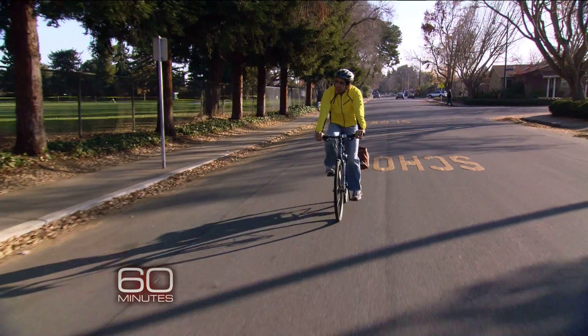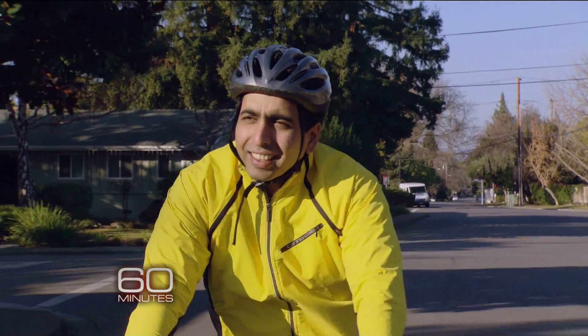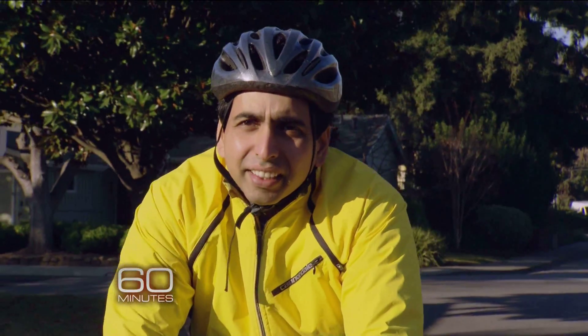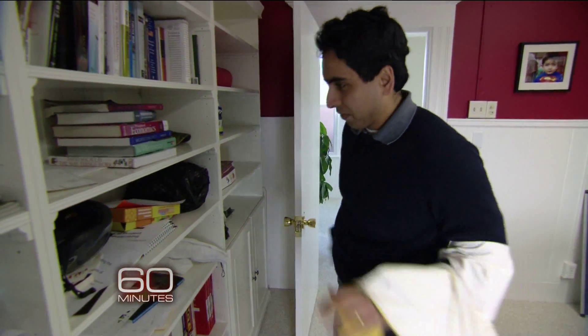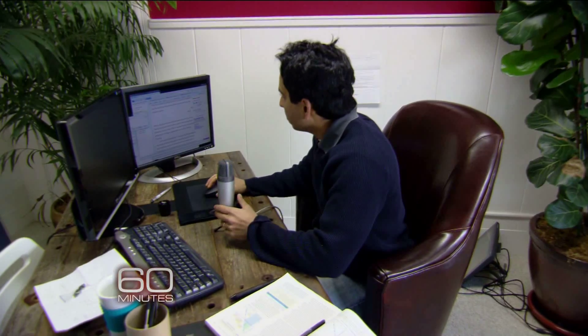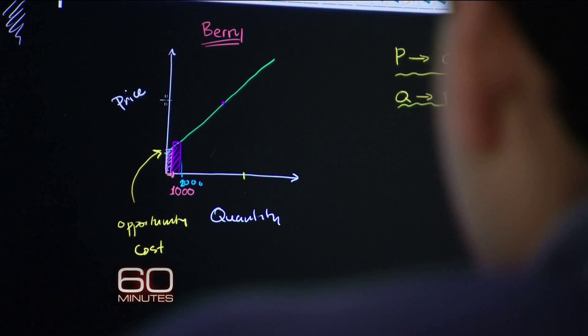35-year-old Sal Khan may look like a bicycle messenger, but with three degrees from MIT and an MBA from Harvard, his errand is intensely intellectual. In his tiny office above a tea shop in Silicon Valley, he settles in to record a 10-minute economics lesson.